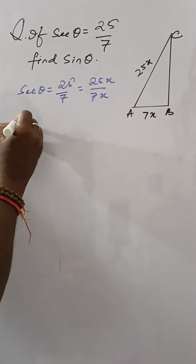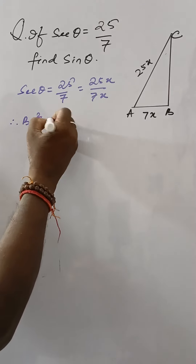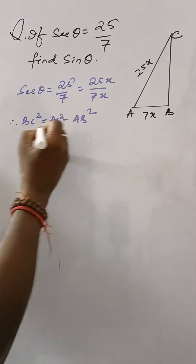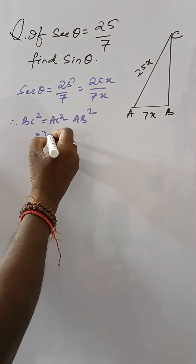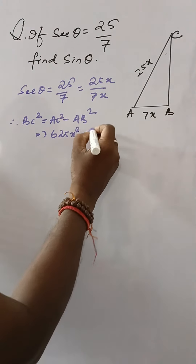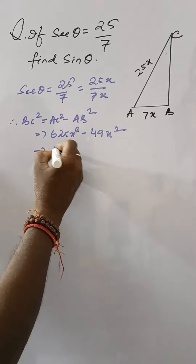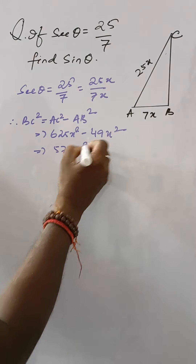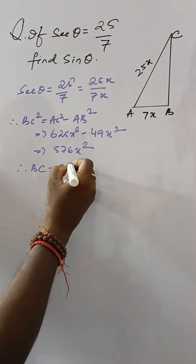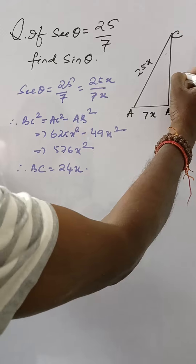BC squared is equal to AC squared minus AB squared, which is 625x squared minus 49x squared, giving us 576x squared. Therefore BC is equal to 24x.